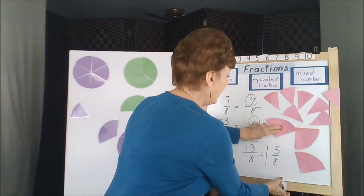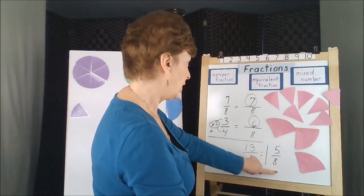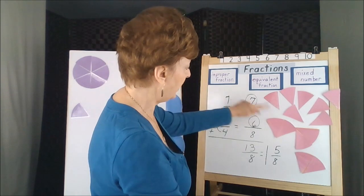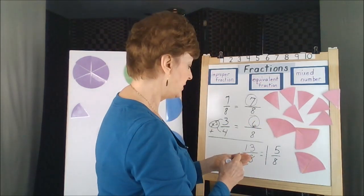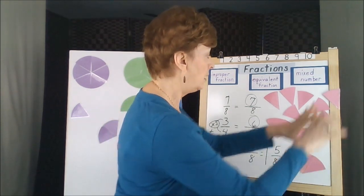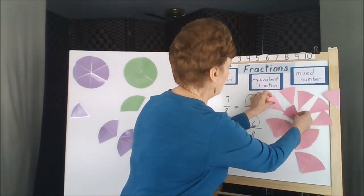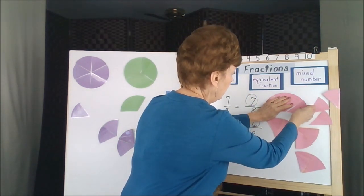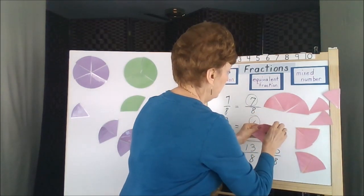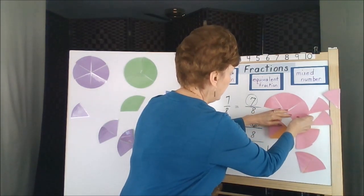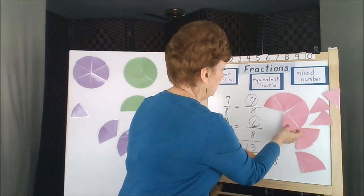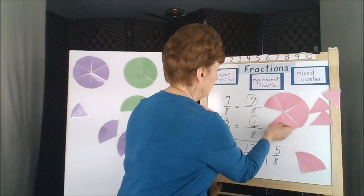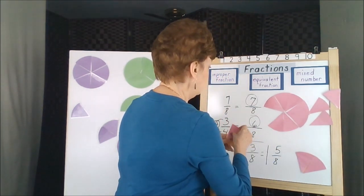One and five eighths. These are equivalent fractions. I now have an improper fraction that changed into a mixed number. Let's see if we can get these to become the whole circle again. One, two, three, four, five, six, seven, eight.